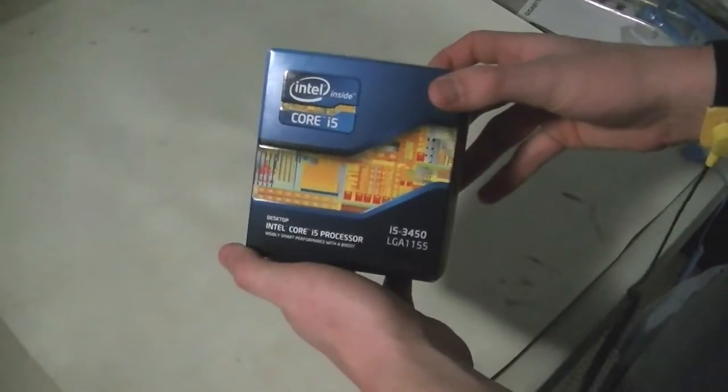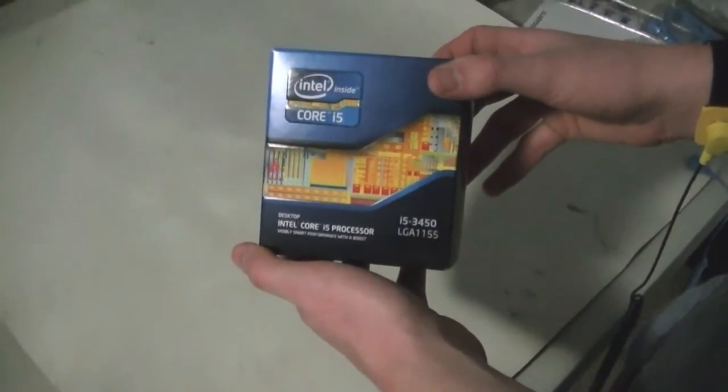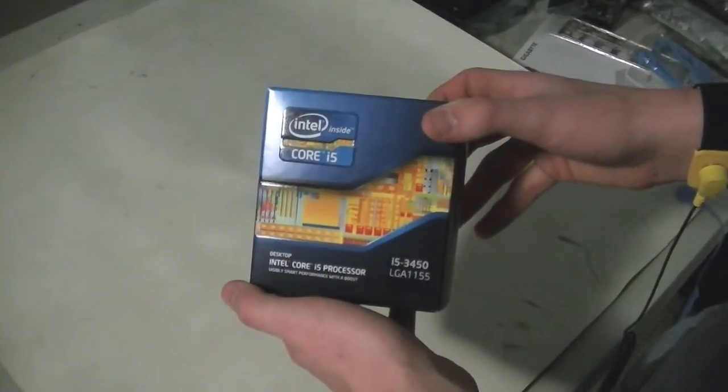Hello, YouTube. Here we have an Intel Core i5-3450, 3.1 GHz, Quad-Core, Ivy Bridge Intel CPU for you guys.